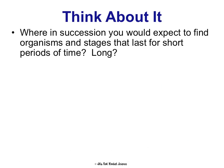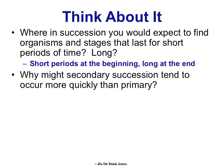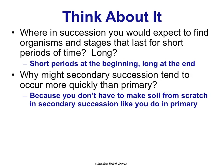Where in succession do you expect to find organisms in stages that last for shorter or longer periods of time? You should see shorter periods at the beginning and then longer at the end — shorter because as the soil is getting more nourished, other organisms are quickly able to move in, and longer as it gets more stable towards the end. Why does secondary succession happen more quickly than primary? Because you don't have to make soil — you're not starting from scratch, so it can get going much quicker.